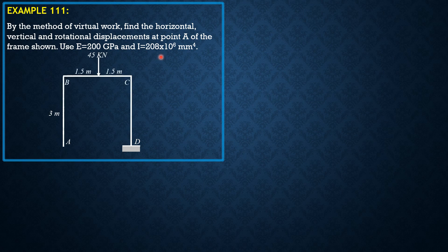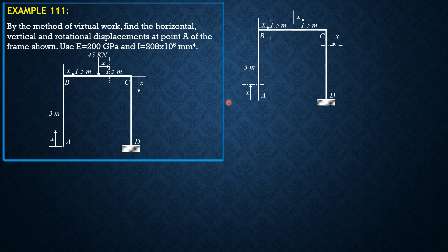By the virtual work method, let's select the sections shown. Because there are no forces in this section up to here, we'll have only two integrals — one for each relevant section. There's no need to compute a third segment. First, let's apply a virtual force positive to the right, assuming the horizontal displacement at A is rightward positive.